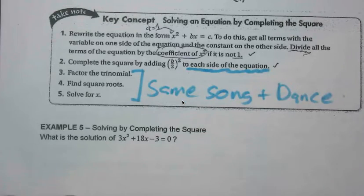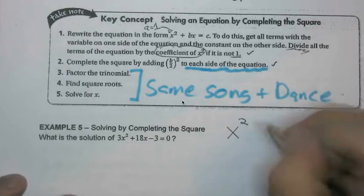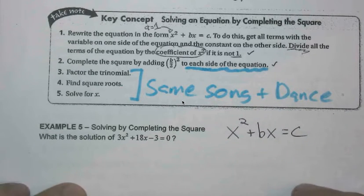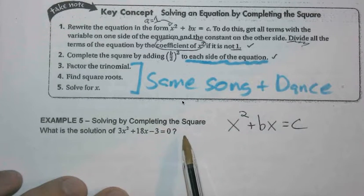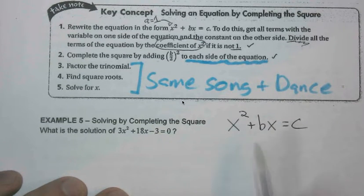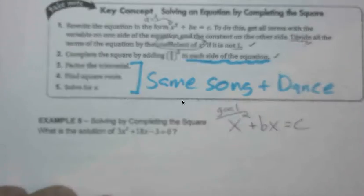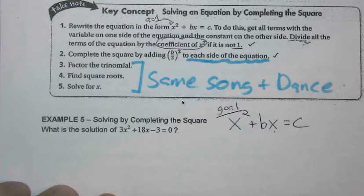All right, so our goal, again, is to try and have x squared plus bx equals c. So if we take a look at this, what can we move to the other side to try and get towards our goal? Because we want to keep x squared and our x term on the same side. What can we move along?